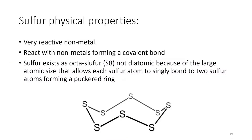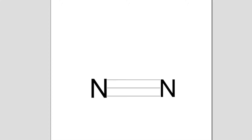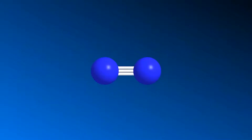Sulfur is a very reactive element that accepts two electrons in the 3p orbital to reach the electronic configuration of the nearest noble gas, which is argon. Sulfur exists as the octa-sulfur S8 molecule, not as an atomic molecule like nitrogen N2.